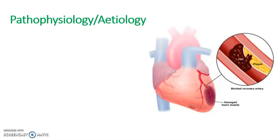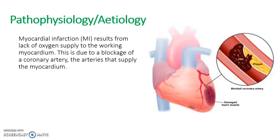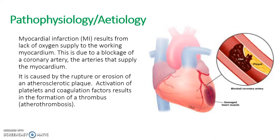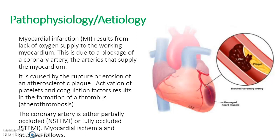The pathophysiology and etiology: myocardial infarction results from lack of oxygen supplied to part of the heart, usually due to blockage of the artery that supplies that area. It is caused by the rupture or erosion of an atherosclerotic plaque, and activation of platelets and coagulation results in the formation of a thrombus — you can see the clot on top of the ruptured plaque, known as atherothrombosis. That will either fully occlude in a STEMI or partially occlude in an NSTEMI. Once the coronary artery is occluded, myocardial ischemia — lack of oxygen — and necrosis will follow.